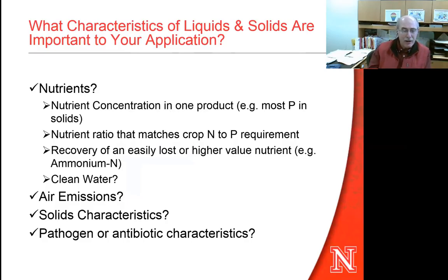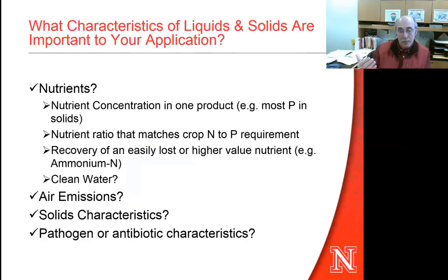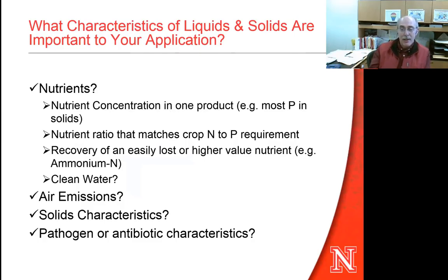Today our discussion is going to focus on nutrients. There might be issues such as: what is the desired nutrient concentration, and do you want most of that nutrient in one product? This is possibly phosphorus in the solid product so you can move it outside of a region. Or do you want a certain nutrient ratio that matches the needs of the crops, or the nitrogen-to-phosphorus ratio that would best match the crop requirement?